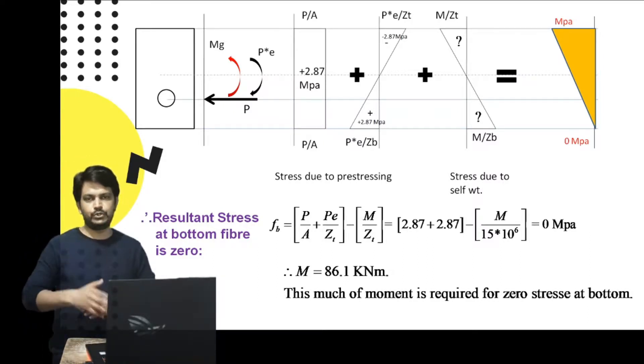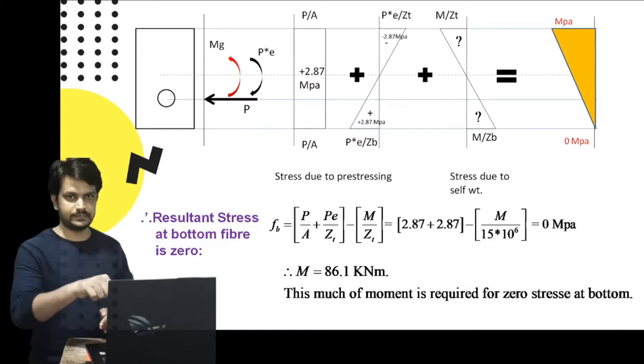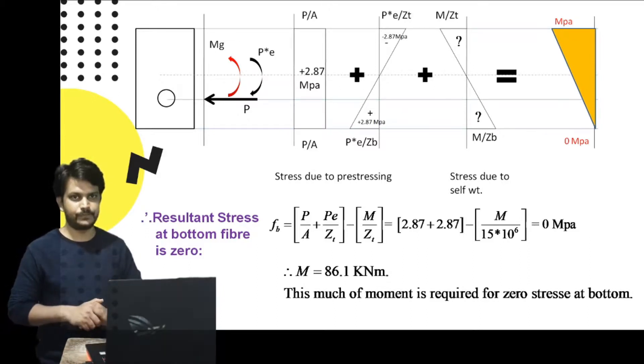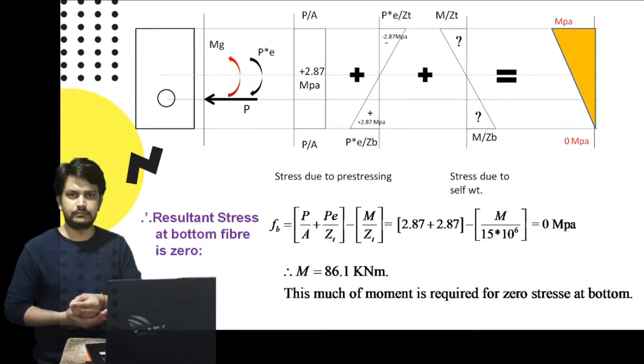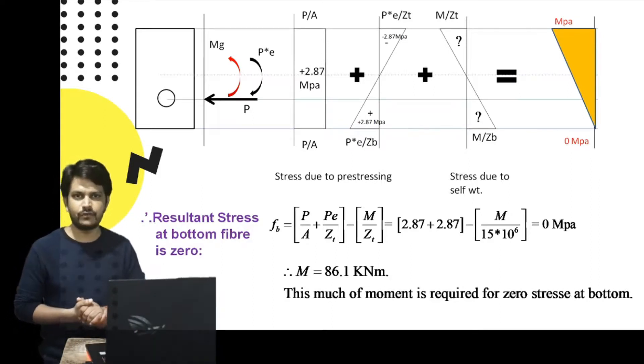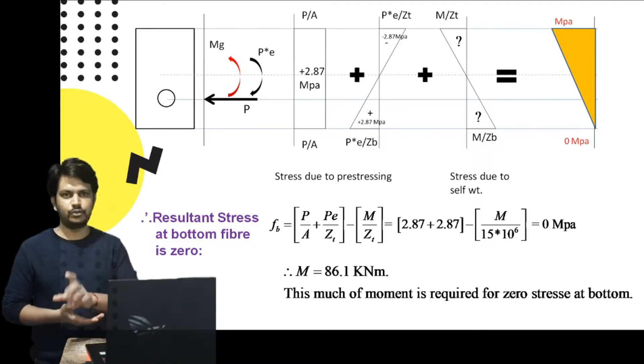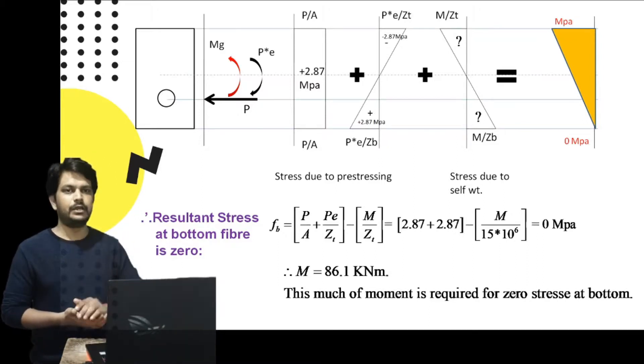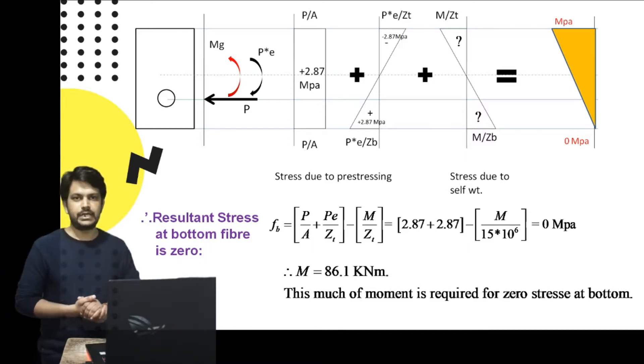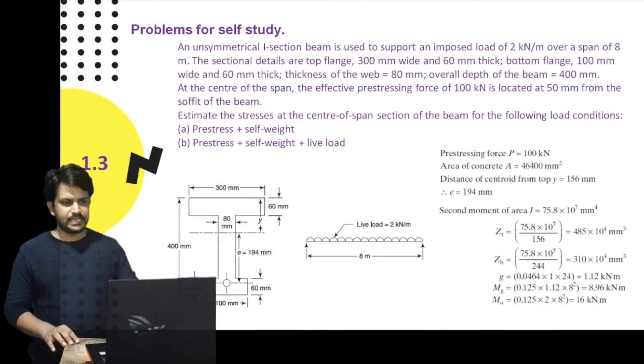Now one task is given to you: find the live load that can be taken for zero bottom stresses. You need to find Mg, the moment due to dead load. You can calculate this from cross section multiplied by 24, the density of concrete. Deduct that from the total moment; the remaining will be Mq. Equating that Mq to qL squared by 8, find q. Q will be the live load to which this beam should be subjected for the condition that bottommost stresses remain zero.